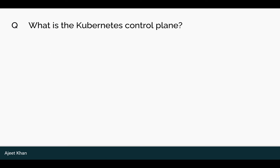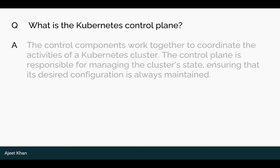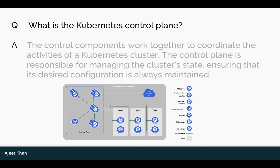What is the Kubernetes control plane? The control plane components work together to coordinate the activities of a Kubernetes cluster. The control plane is responsible for managing the cluster's state, ensuring that its desired configuration is always maintained. As shown in the diagram on screen in blue dashed lines, components like Scheduler and API Server come under the control plane.